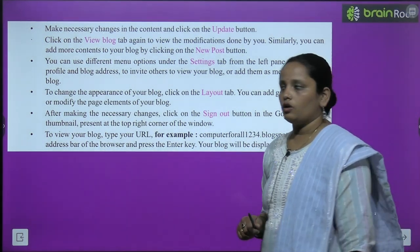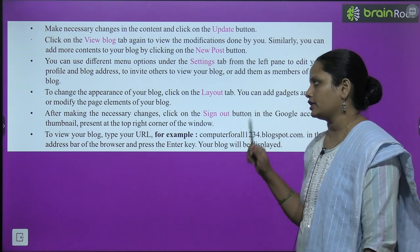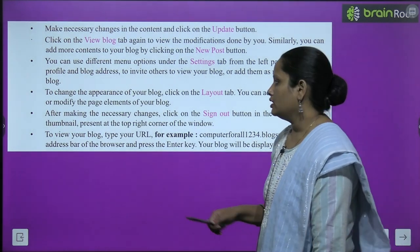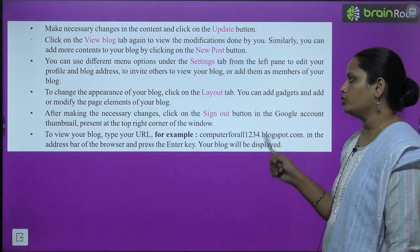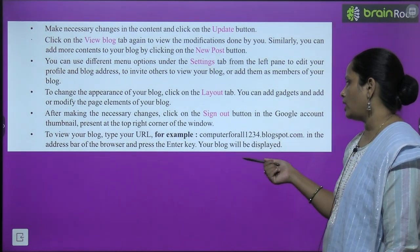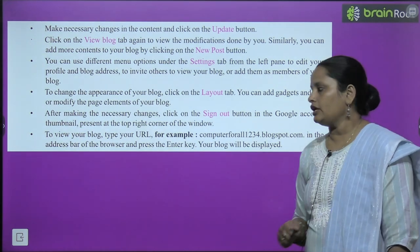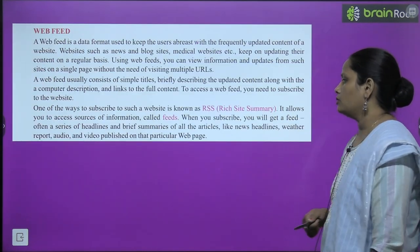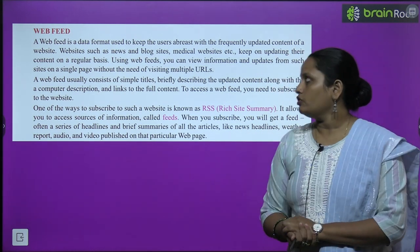To change the appearance of your blog, click on the Layout tab. You can add gadgets and modify page elements. After making all changes, go to Sign Out in the Google account thumbnail at the top right corner. To view your blog, enter your URL — for example, computerforall1234.blogspot.com — in the address bar of the browser and press the Enter key. Your blog will appear.